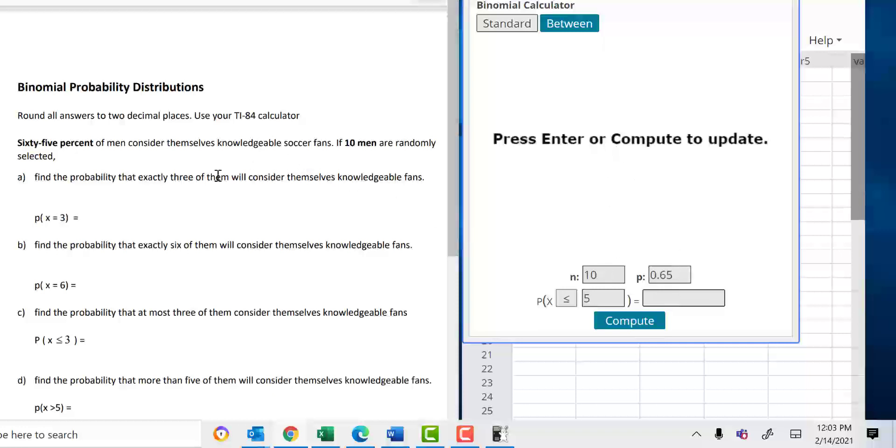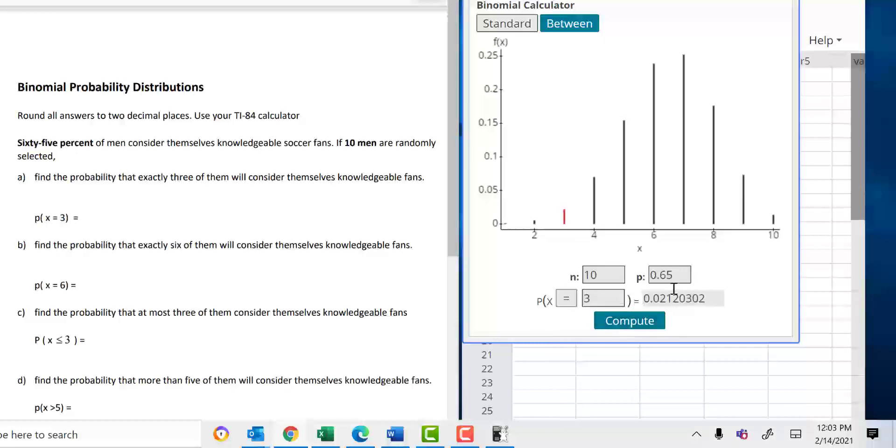Now, the first question. What is the probability that exactly three of them? Exactly means the equal sign. So, I'm just going to change this to an equal sign. I'm going to put a 3 and then hit Compute. And here you go. You got the answer, which is 0.0212. So, the probability of X equals 3, you type in the answer 0.0212. I cannot annotate on this PDF file, so I'm not going to be able to write the answers.